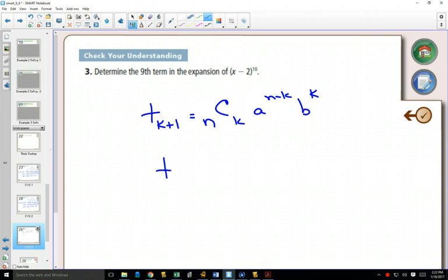So term 9 is going to equal what? And the thing about this formula is you just need to know where the numbers come from. Where do we find n? K plus 1 is 9.